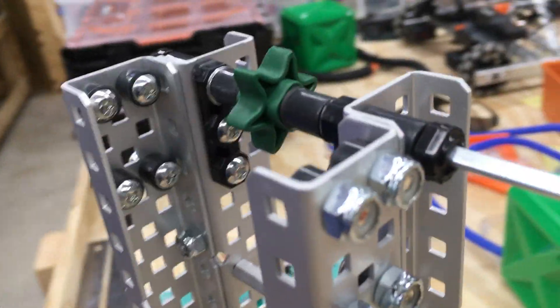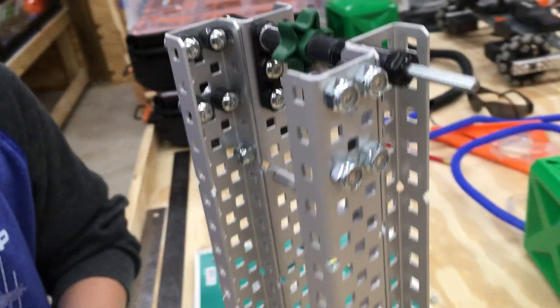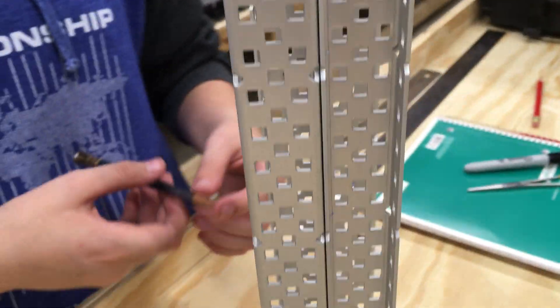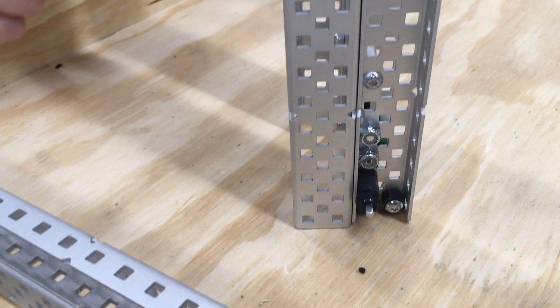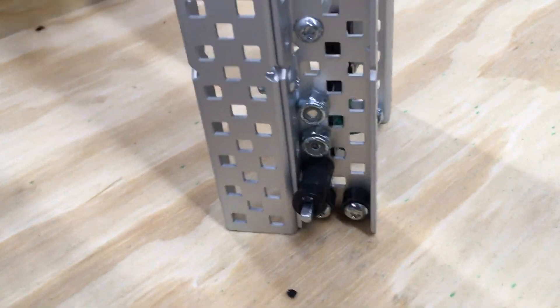We're not gonna show you how it looks with the chain on it, but all the spacers are 0.25, except for the ones on the sprockets.